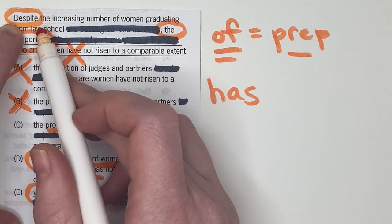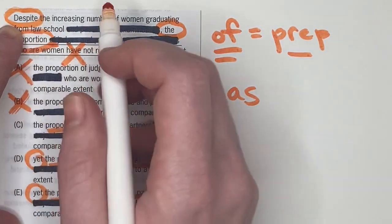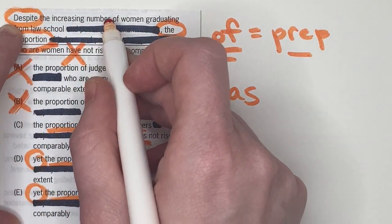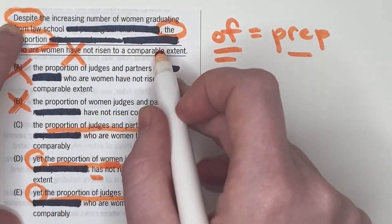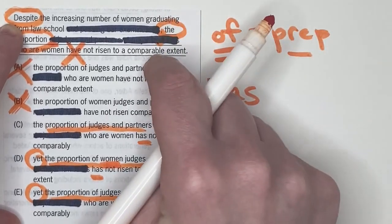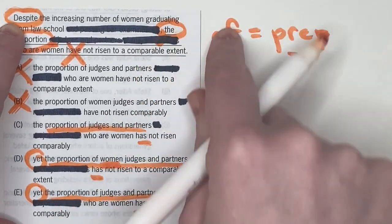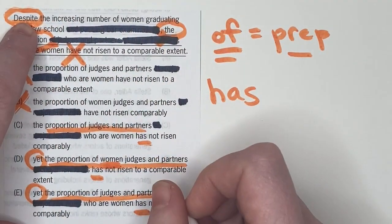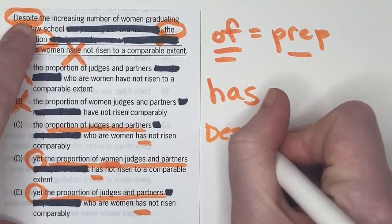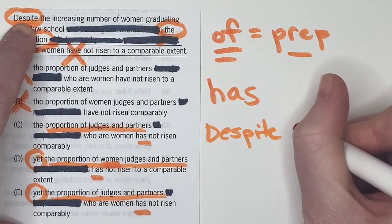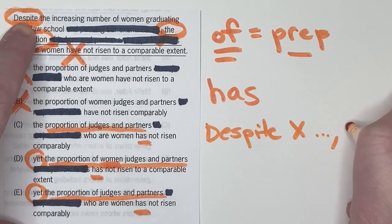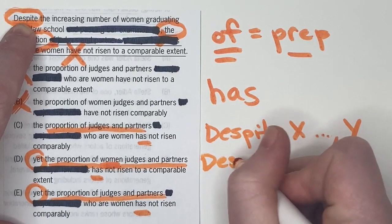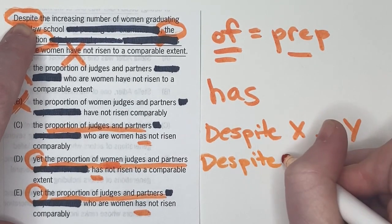but it is worth noting how important the non-underline word despite is here. Despite is a contrast keyword. So if you're starting a sentence with a dependent clause, something like this, it says, despite X, blah, blah, blah, blah, blah, comma. That's the other big structural marker here. Y, blah, blah, blah, blah, blah, blah. You only need one contrasting keyword. So you can just say, despite X, blah, blah, blah, comma, Y. You don't need another one because it would be redundant. It's like you're saying the same thing twice.